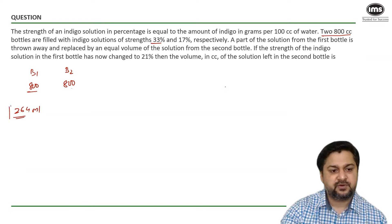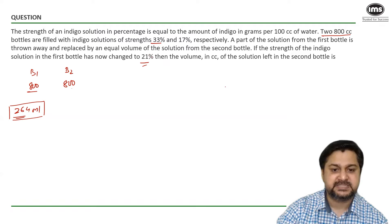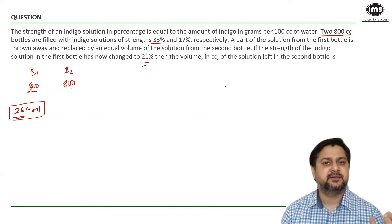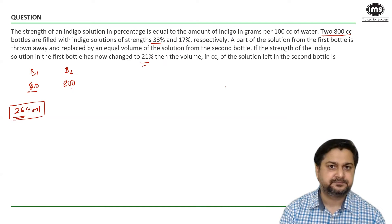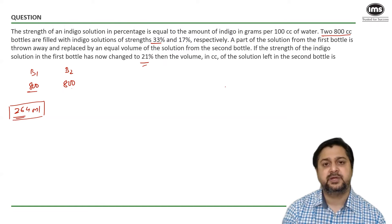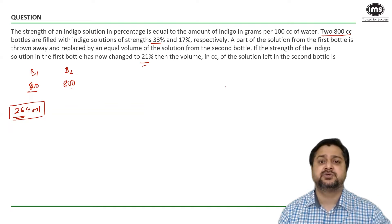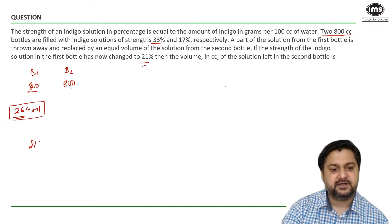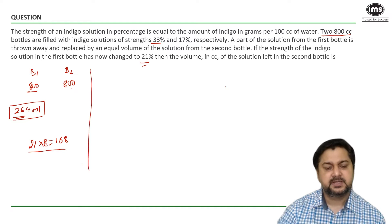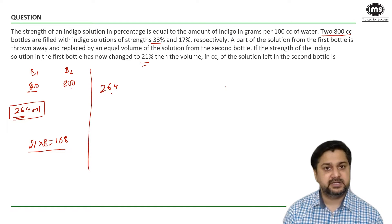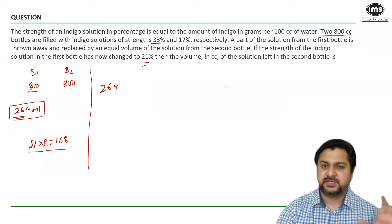If you look at it, 264 ml of indigo was in bottle 1 earlier, and now after removing something and adding from the second bottle, I am left with 21% indigo. If 800 ml is the initial quantity, out of which x is removed and x is re-added, the total quantity is still 800 ml. In the eventual scenario, the total quantity of indigo is 21% — earlier it was 33%, and now 21% of 800 is 168 ml.